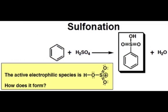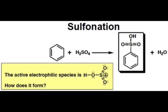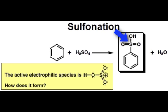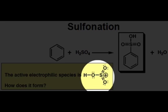The last reaction we'll take a look at in this webcast is the aromatic sulfonation reaction. An aromatic ring can react in the presence of fuming sulfuric acid to introduce a sulfonic acid group onto the aromatic ring. Again, the key electrophile in this reaction is a protonated sulfur trioxide species.